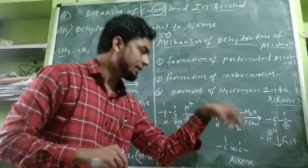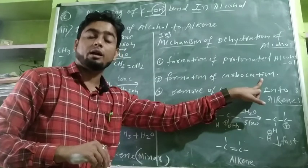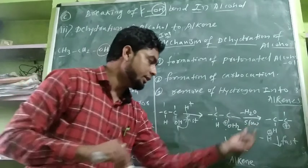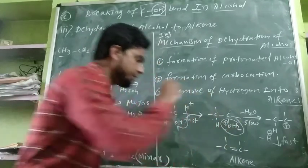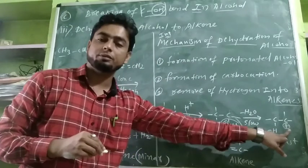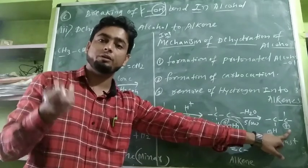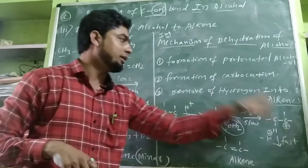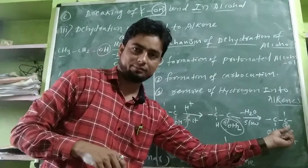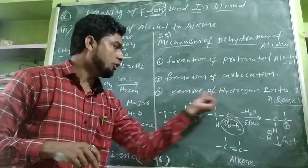Second step: formation of carbocation. A carbocation is a carbon that carries a positive charge. In this step, the protonated alcohol loses the H2O molecule. The carbon that loses the water molecule is left with an unbalanced valency and carries a positive charge. This carbon with a positive charge is called a carbocation. So in the second step, a carbocation is formed.